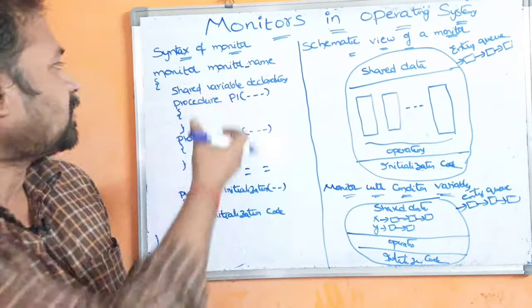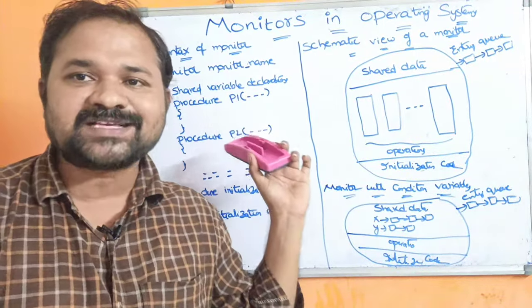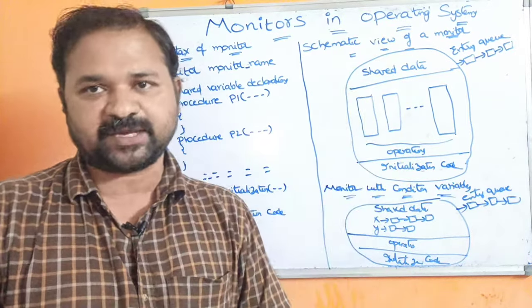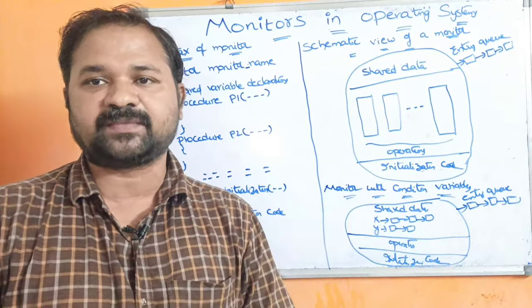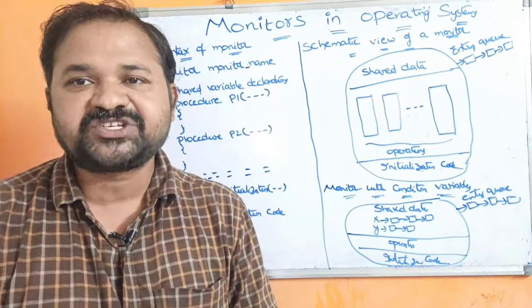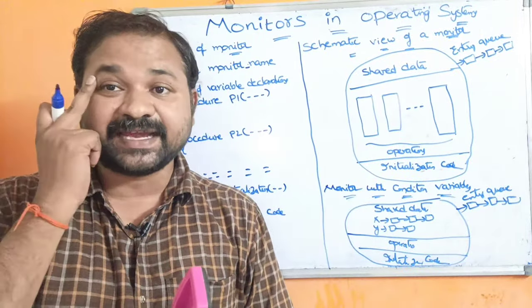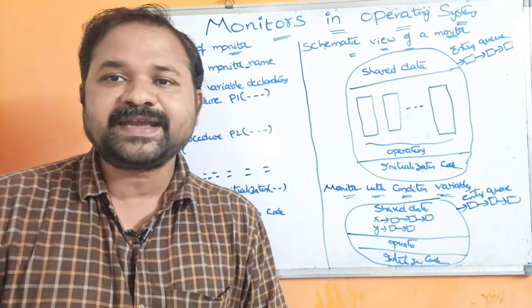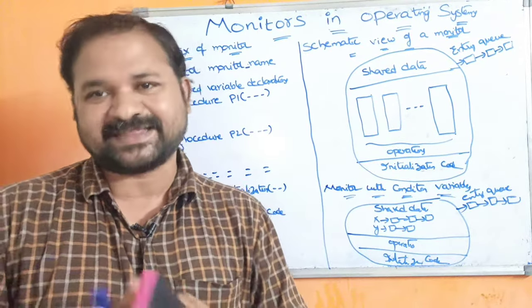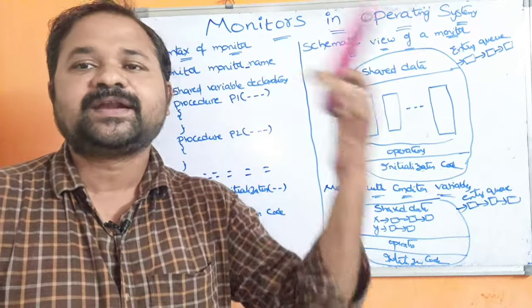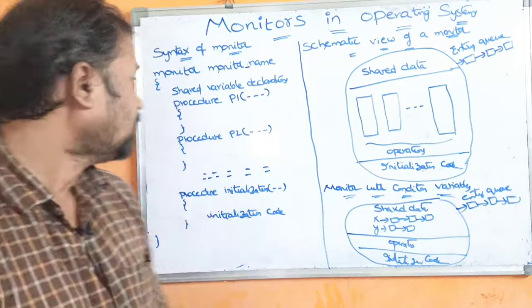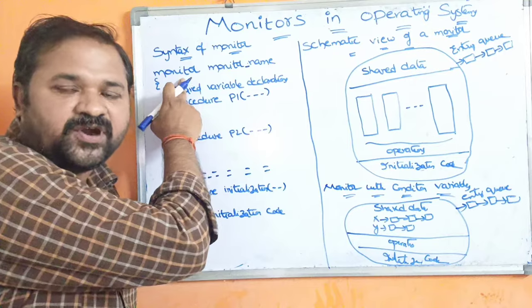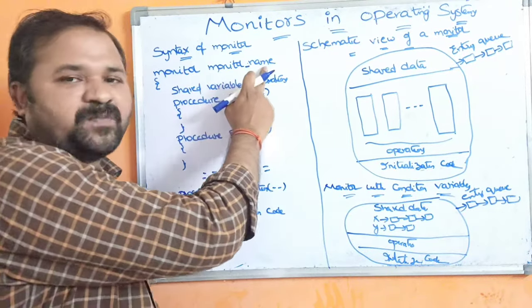Now let us see the syntax of a monitor. The syntax of a monitor is similar to the syntax of a class in Java programming. A class contains a collection of data members and a collection of functions or methods. The monitor is defined with the help of a keyword called 'monitor' followed by the name of the monitor.